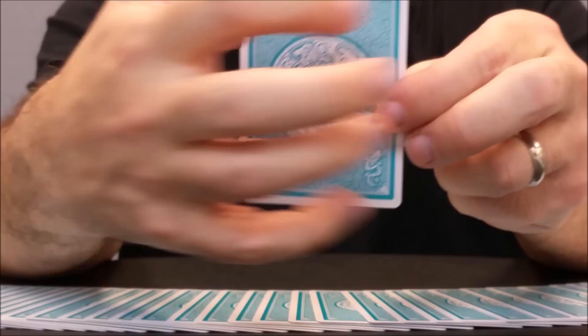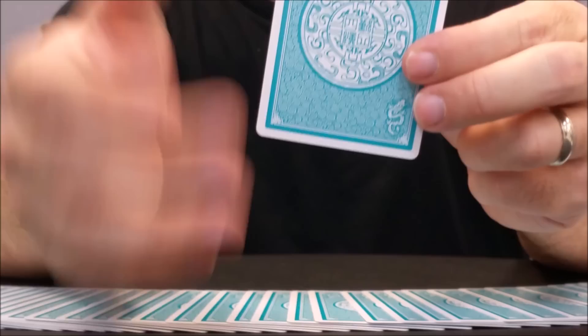The back design has a thin white border and then an inside turquoise border. The entire back design is done in turquoise. It's one color. There's a dragon in the corners. It is a two-way back design.